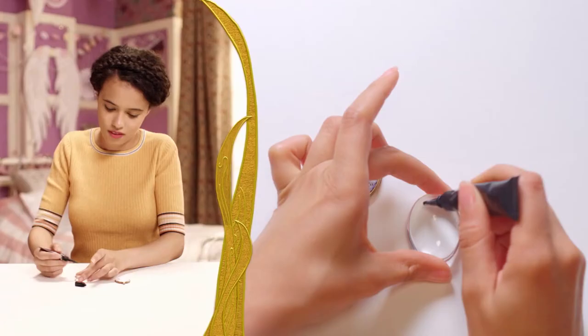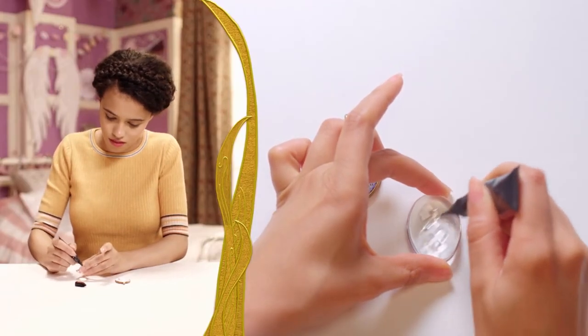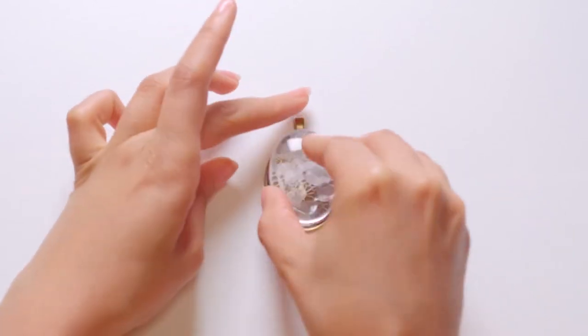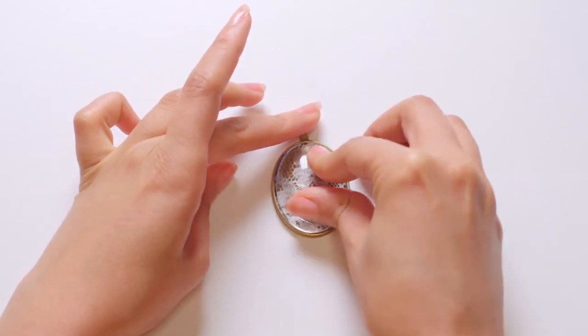Take the glass cover and apply a thin layer of glue to the flat side. Then stick the glass cover onto the lace fabric.